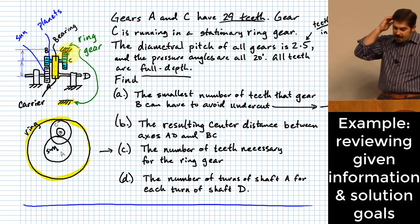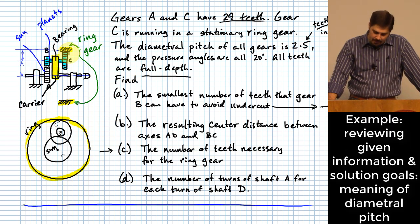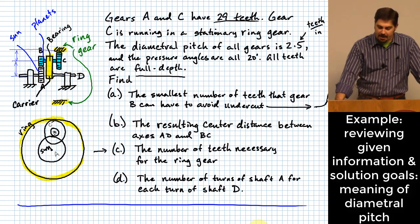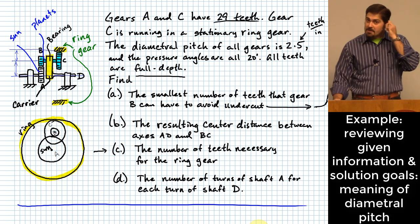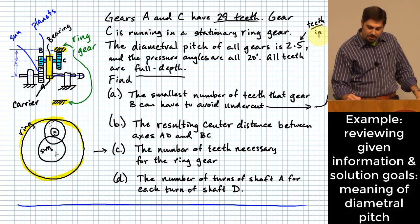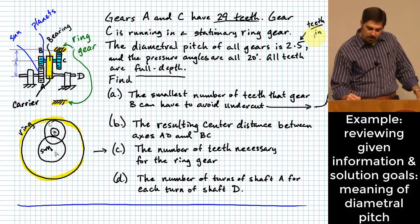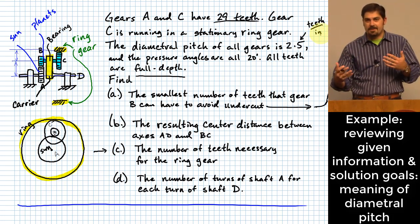Gears A and C have 29 teeth. Gear C runs in a stationary ring gear. The diametral pitch of all gears is 2.5. When you see diametral pitch stated as a number, the units are teeth per inch. The next question to ask is always: inches of what? There are at least two different kinds of pitch — diametral pitch, where you're measuring teeth per inch of diameter, and circumferential pitch, which is teeth per unit of circumference.